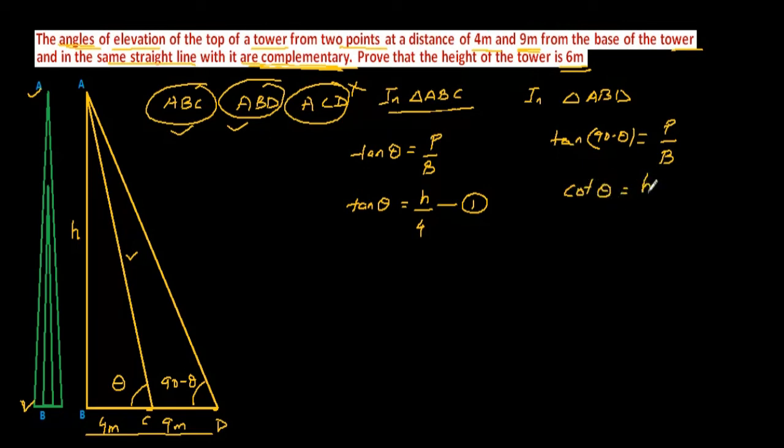Now, perpendicular is H again and the base in this case is 9. We know cot theta can be written in the form of tan theta if the right hand side can be reciprocal. So it will be 9 by H because cot theta and tan theta are reciprocal to each other. Let this be equation 2.